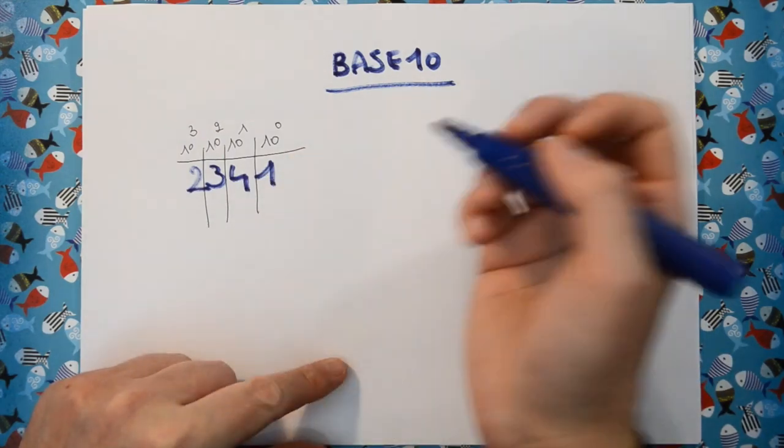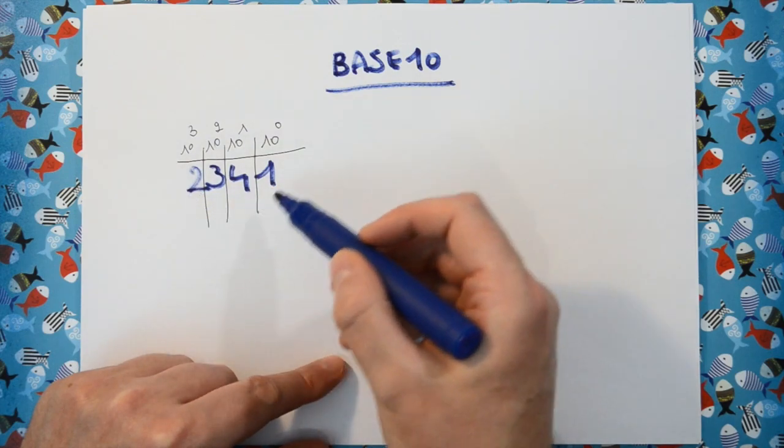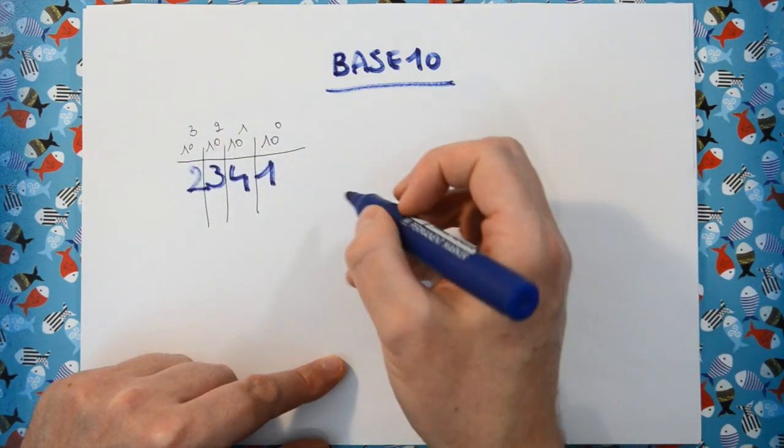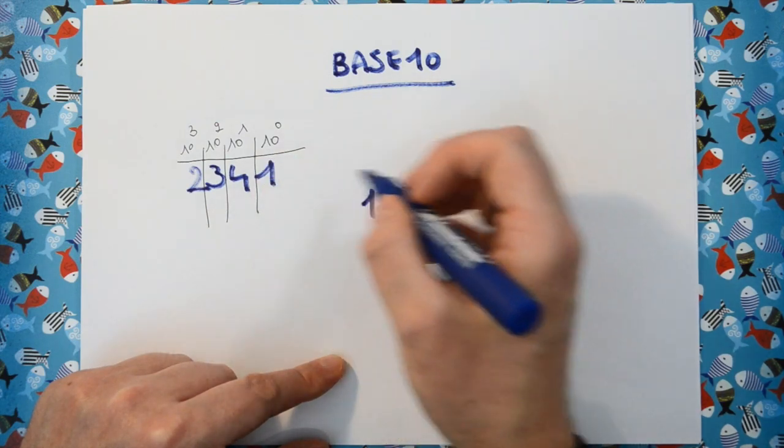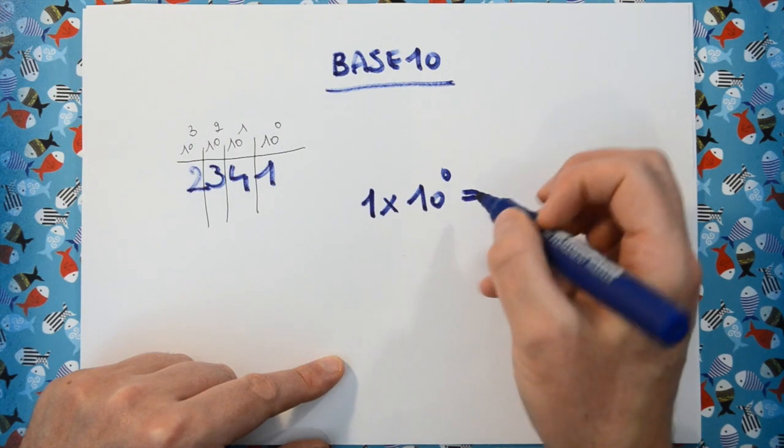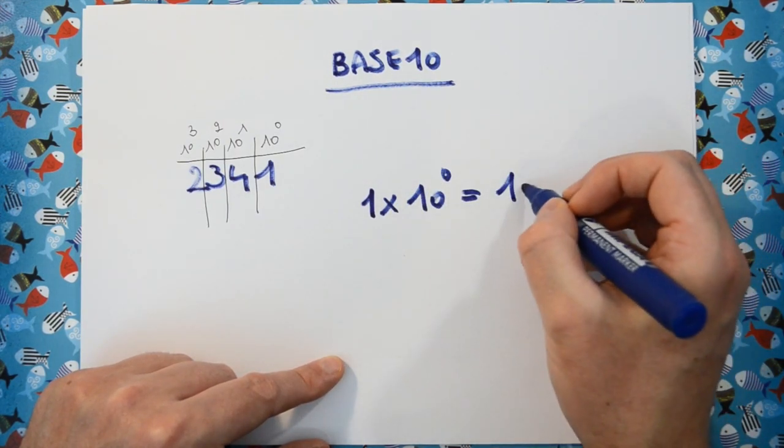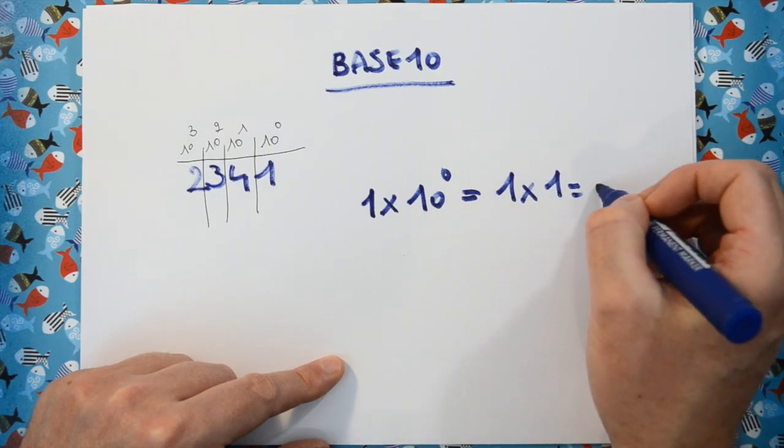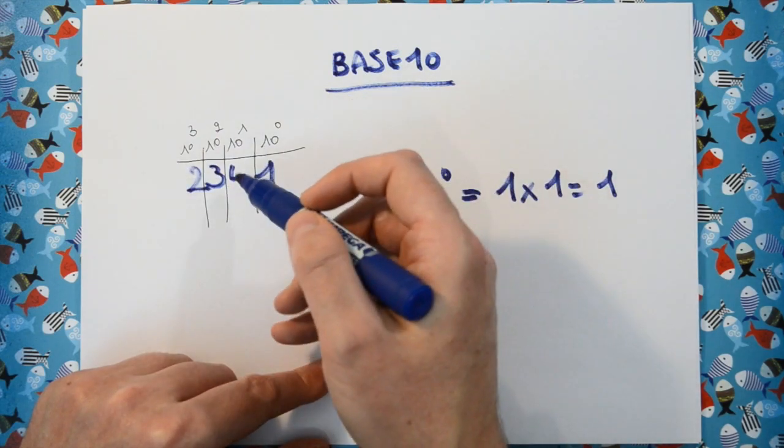So let me quickly calculate what this number is, or I should say how we construct this. So we start off with 1 times 10 to the power of 0. Any number raised to the power of 0 is 1, so 1 times 1 equals 1. Then the second symbol here is 4, and in base 10 this stands for how many times